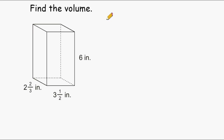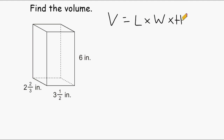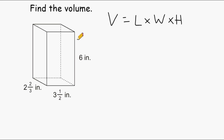To find the volume of any rectangular prism, we just take that prism's length, multiply it by its width, and multiply it by its height. The length and the width represent the two dimensions at the bottom, and multiplying those two dimensions will actually give us the area of the base. And if we take that area and multiply it by its height, that will add depth or give it volume.